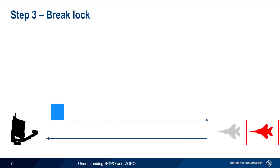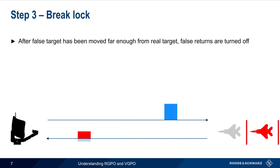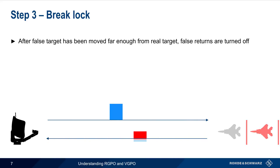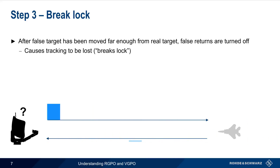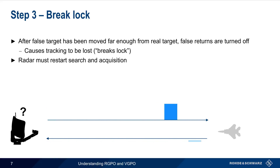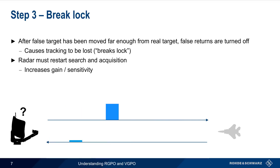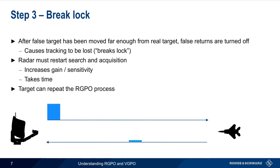The final step is breaking lock. After the false target has been moved far enough away from the real target — that is, outside of the real target's range gate — the false returns are turned off. This causes the radar to lose tracking or break lock. The radar must then restart the search and acquisition process, usually by increasing gain or sensitivity, and this process takes some amount of time. The target can, however, restart or repeat the Range Gate Pull-Off process as many times as necessary.